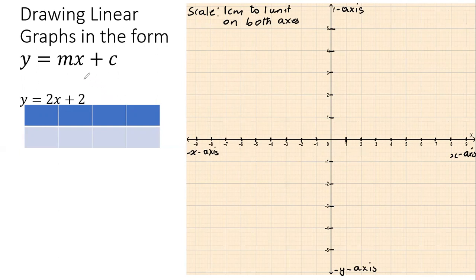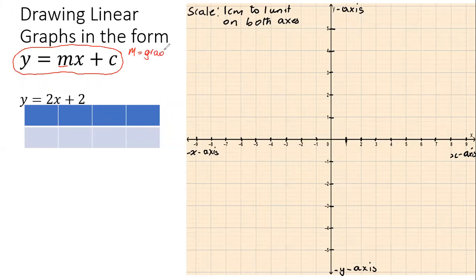Note that the general form for a straight line is y = mx + c, otherwise known as the slope-intercept form, where m is what we call the slope or gradient, and c is the y-intercept — the point at which the line will intersect the y-axis.